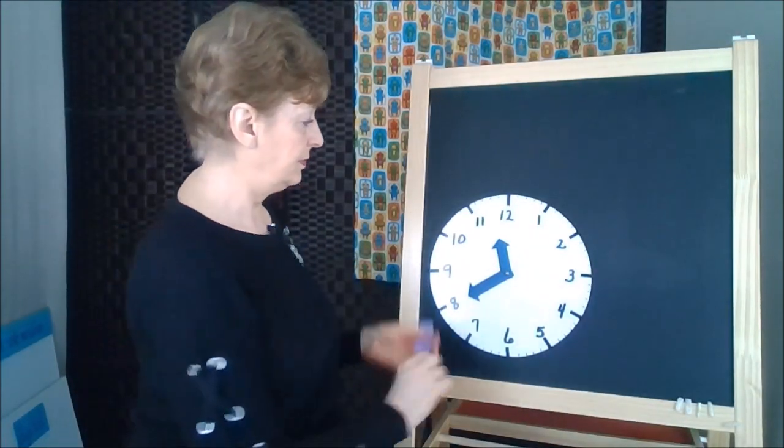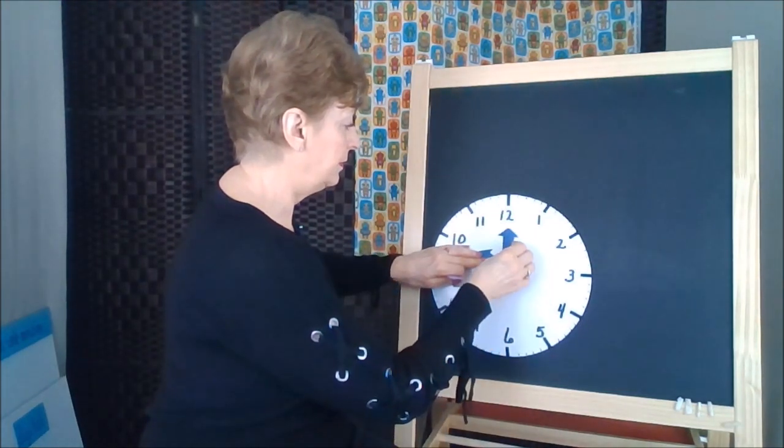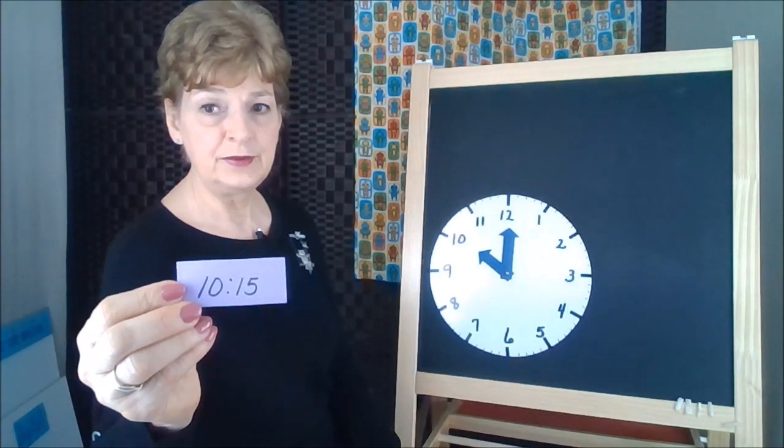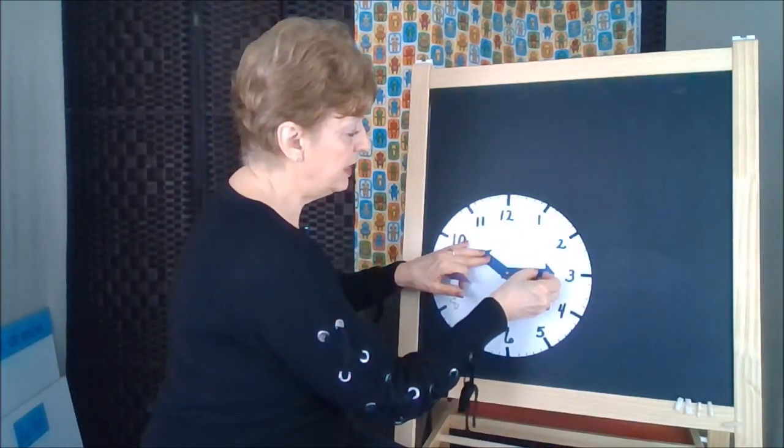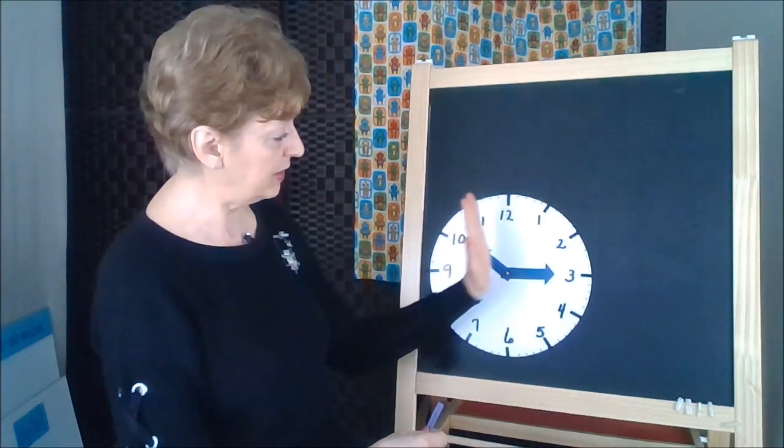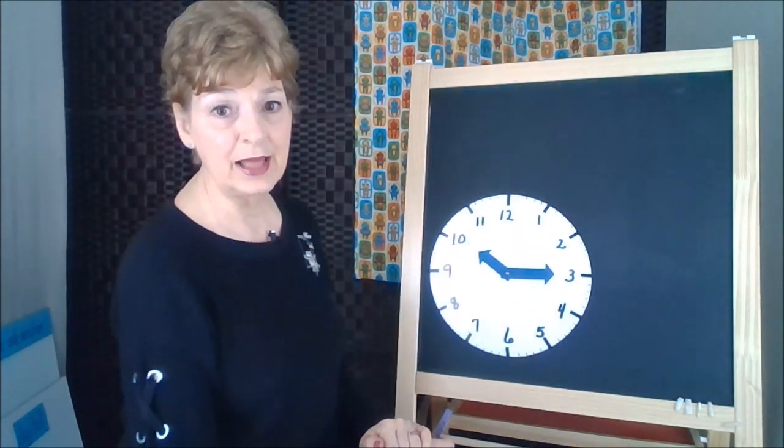10, 15. We'll make 10 o'clock. It's 10 o'clock, 10, 15, 5, 10, 15. The minute hand didn't go past the halfway mark of the clock, so the small hand can just stay on the 10.